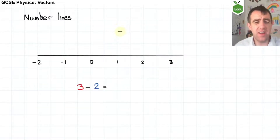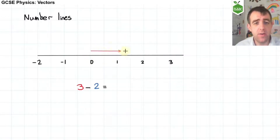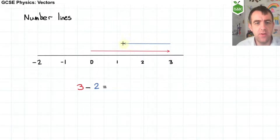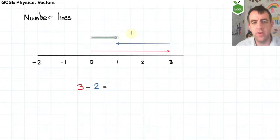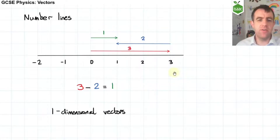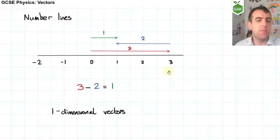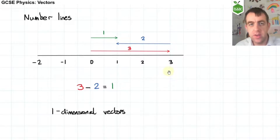And of course this is exactly the way you did maths when you were very young: starting from 0, 3 to the right, add 2 to the left, and the resultant would be 1 to the right. Now these are one-dimensional vectors, and of course these numbers could be any quantity that has a direction — force, velocity, momentum, for example.